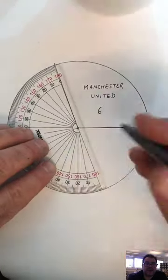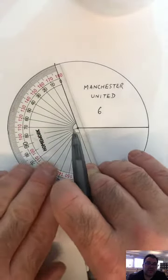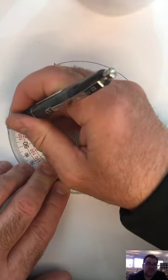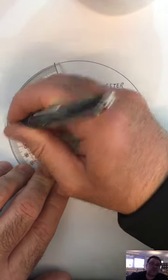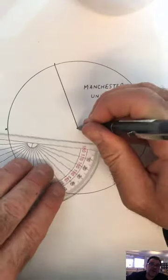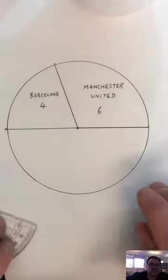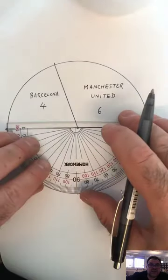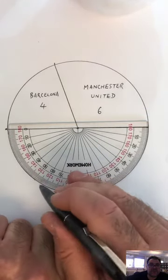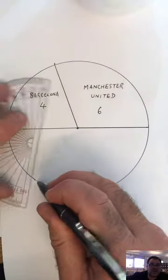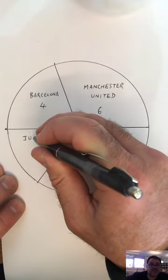Then I'm going to line up my angle measurer with the line I just drew against 0, and count the degrees around for the next one. Mark off the angle for Barcelona that I worked out before, and draw a new line — that was Barcelona, four people. Then line up the angle measurer again, centre at the centre, 0 on the new line, and mark off the next angle. That was Juventus, three people.